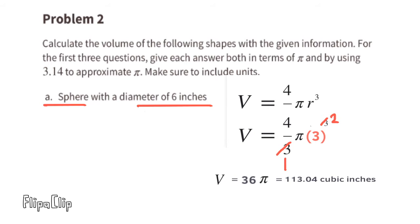That's in terms of pi. Using 3.14 to approximate pi, 36 times 3.14 equals 113.04. The volume of a sphere with diameter 6 inches would be 113.04 cubic inches.